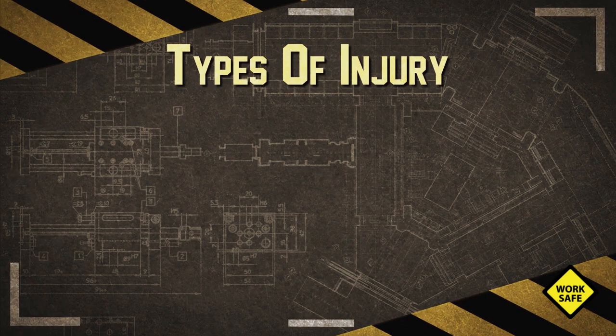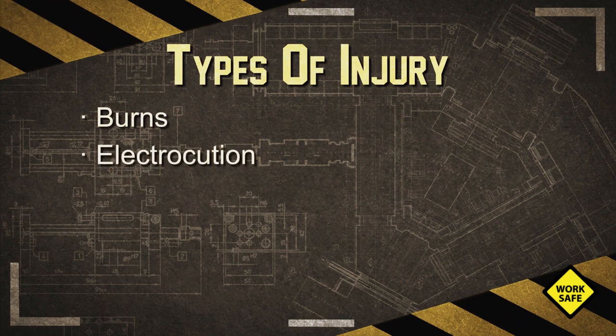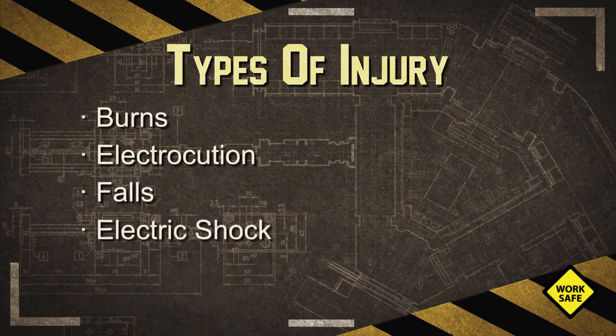The main types of electrical injuries are burns, electrocution — which is always fatal — falls resulting from contact with electrical energy, and electric shock.